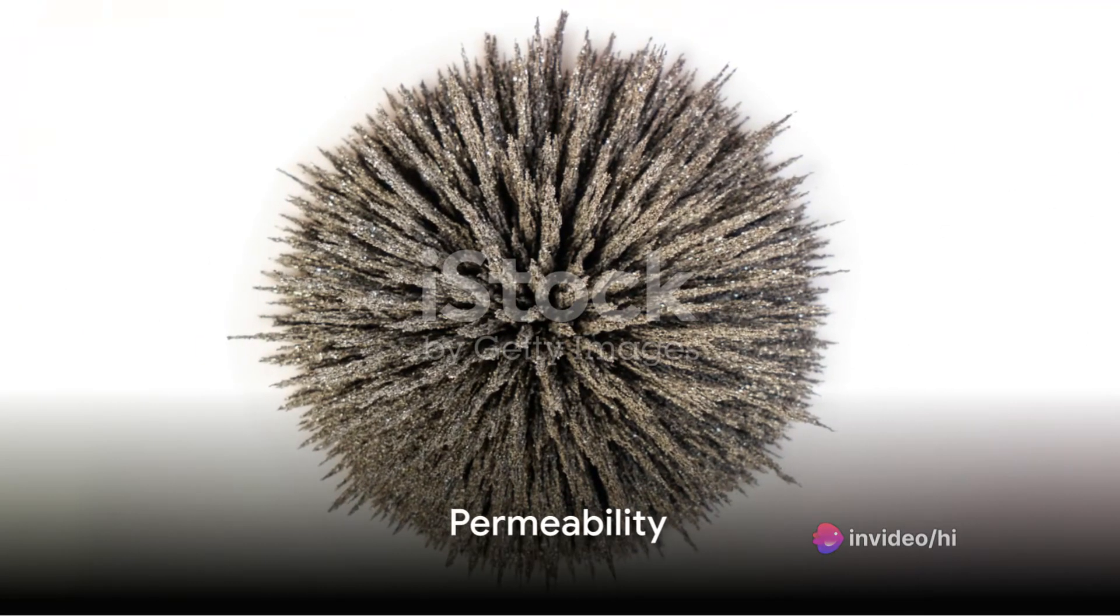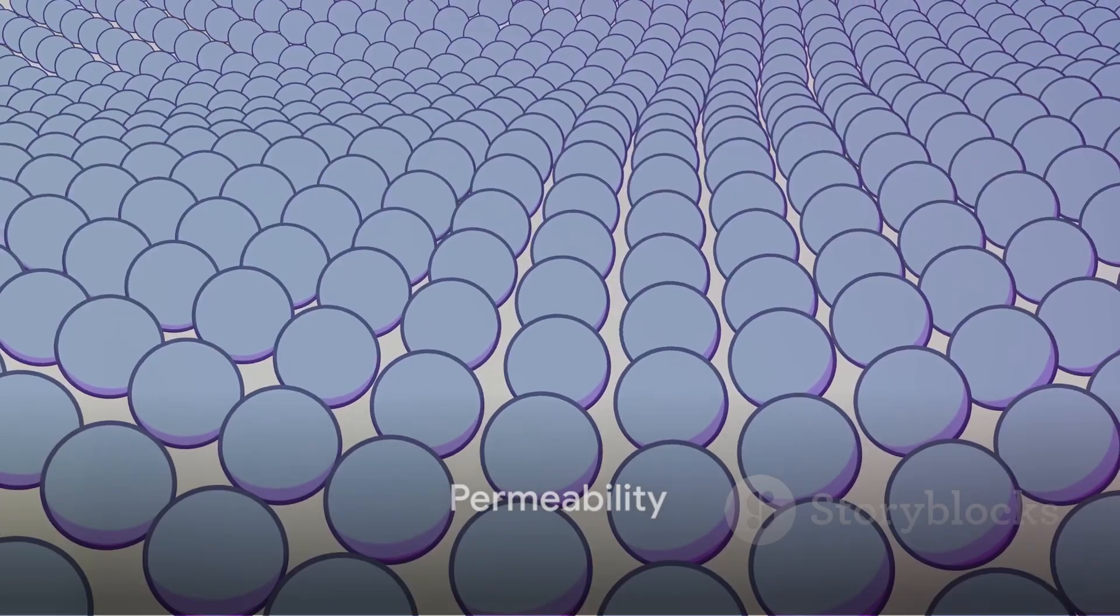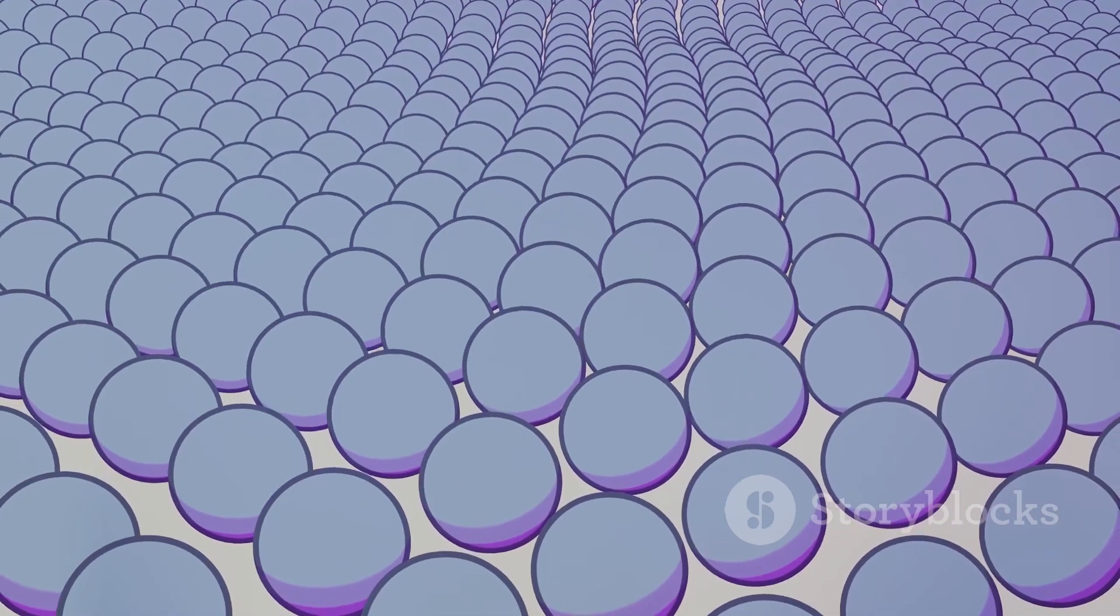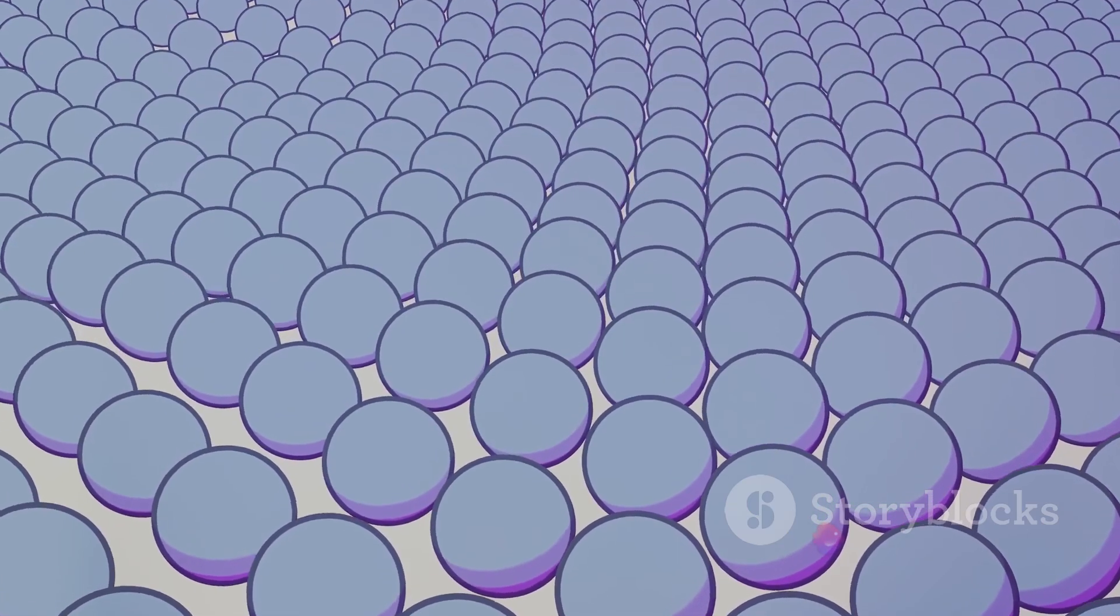Permeability is another interesting concept. It tells us about a material's ability to allow magnetic lines of flux to pass through it. Imagine a net. A net with larger holes allows more balls to pass through, just like a material with high permeability allows more magnetic lines of flux.